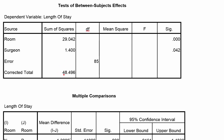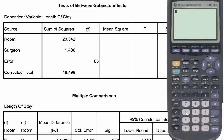The total sum of squares is found by adding up the three component sum of squares. So if we add the room sum of squares to the surgeon sum of squares to the error sum of squares, we get the corrected total. Taking the corrected total and subtracting away 29.042 and 1.40, we get the error sum of squares. So 48.496 minus 29.042 minus 1.4 gives us 18.054 as our error sum of squares.